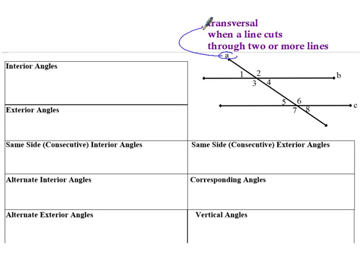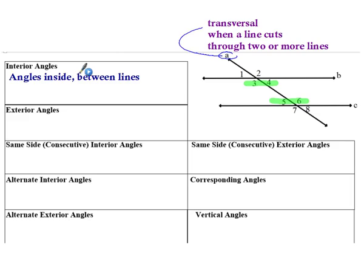You can see I have eight different angles labeled, so let's talk about some vocabulary. Interior angles — when two lines are cut by a transversal, any angles that are between those two lines are considered interior. My interior angles are angles 3, 4, 5, and 6.